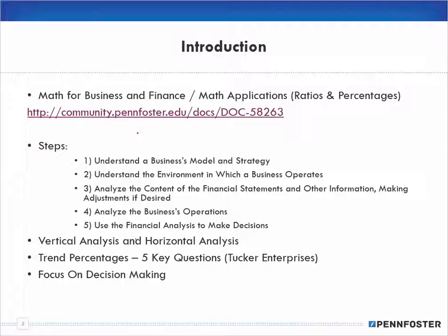It amazes me when students are in managerial accounting and they're being given those ratios a fourth time but still get them wrong. Just be aware that if you're having trouble with anything here, you can go back to math for business and finance or math applications and watch the theory videos there, look at the worked-out homework problems, or go back to the specific chapters in financial accounting to see how those ratios are worked out.